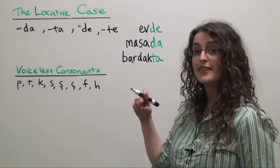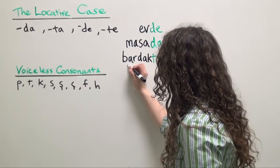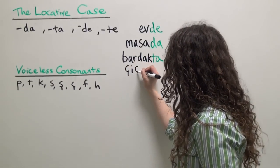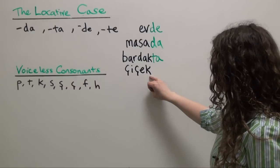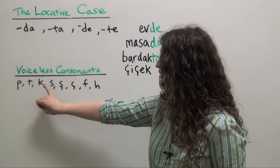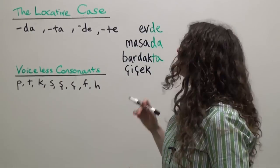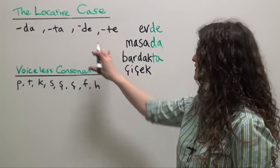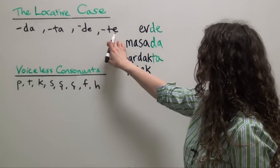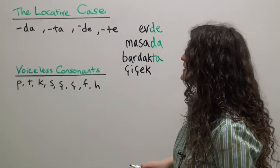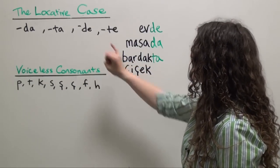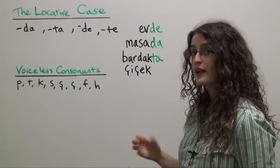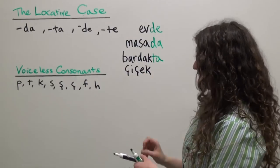Let's say we want to say on the flower. Turkish word for flower is çiçek. We notice that çiçek also ends in a K, one of our voiceless consonants, so we're going to choose a version of the locative case ending that also starts with a voiceless consonant. So of our four options: da, ta, de, and te, for çiçek to say on the flower we're going to choose çiçekte.